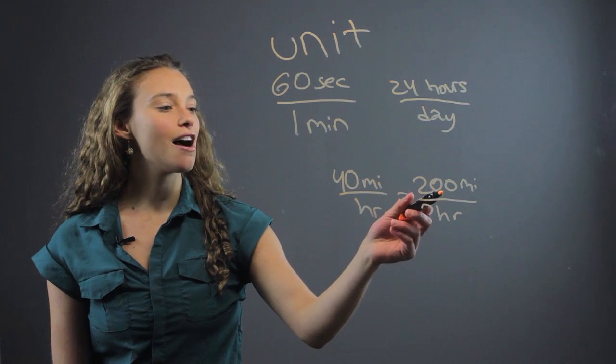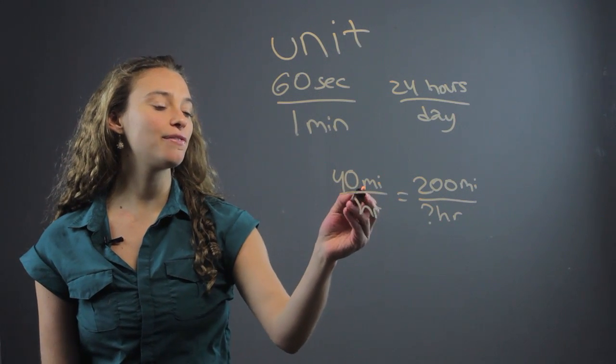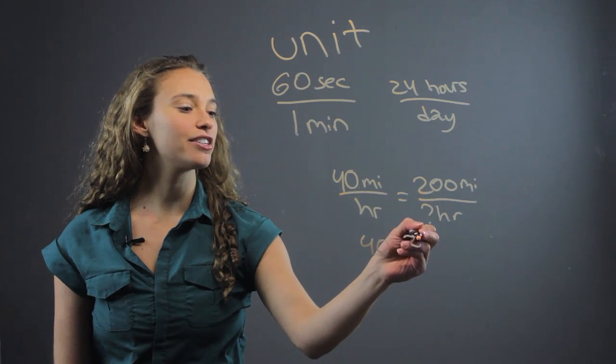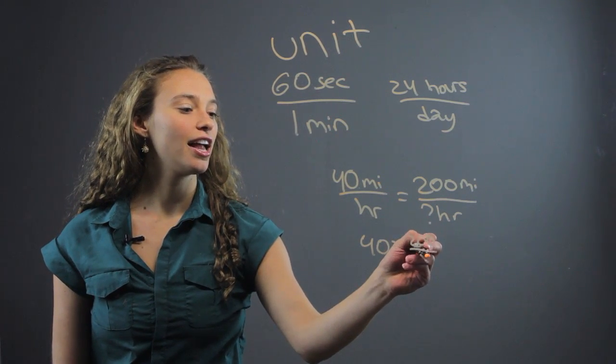Well, here we have a problem. We have 40 over 1, so that's just 40 equals 200 over x.